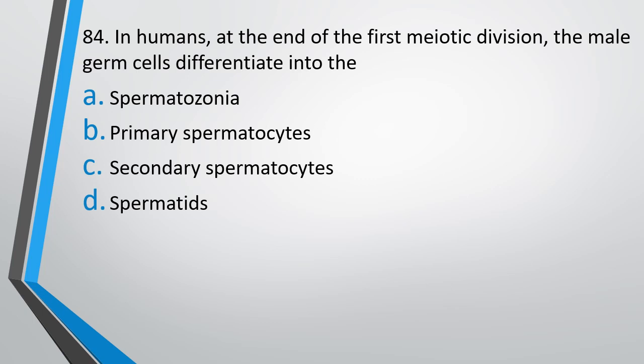Question No. 84. In humans, at the end of the first meiotic division, the male germ cells differentiate into: spermatogonia, primary spermatocyte, secondary spermatocyte, or spermatids. The correct answer is option C, that is secondary spermatocytes.